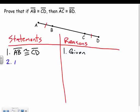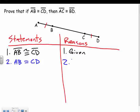So I'm going to say the distance from A to B is equal to the distance from C to D. That's the definition of congruence. Anytime we go from congruence to equality, or equality to congruence, it's the definition of congruence. We're going to use that quite a bit. Now I can go ahead and start adding segments together.